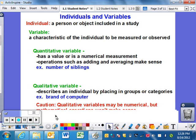The other possibility is qualitative. Qualitative describes an individual by placing it in groups or categories. An example would be a brand of computer - Macintosh, Apple, HP. Caution: qualitative variables may be numerical, but mathematical operations won't make sense.